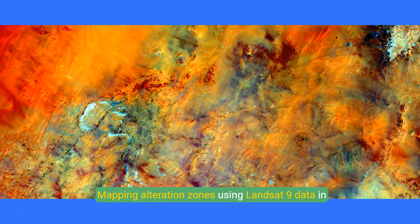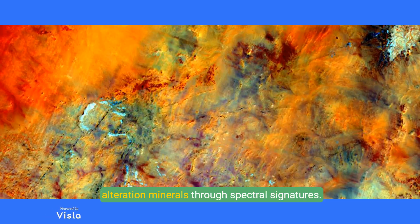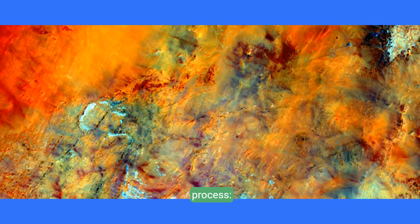Mapping alteration zones using Landsat 9 data in QGIS is a powerful method for mineral exploration, as it allows the identification of hydrothermal alteration minerals through spectral signatures. Here's a step-by-step guide to assist you in this process.